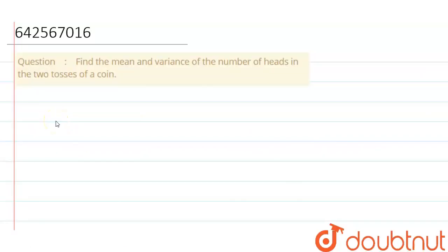Hello friends, our question is find the mean and variance of the numbers of heads in two tosses of a coin. So, first of all let me make a sample space of tossing two coins.